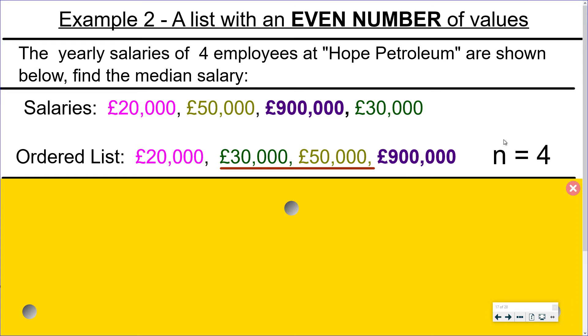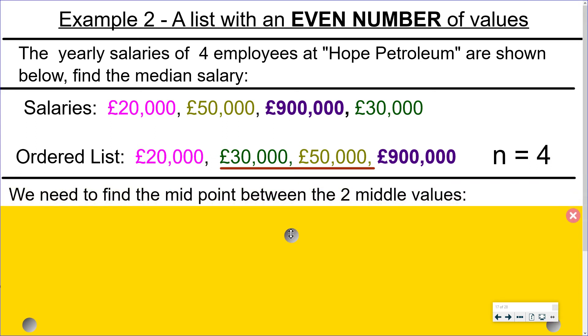Now because the list has an even number of values we can't actually pick up one number as being the middle number from the list. So in this case we have two middle numbers, £30,000 and £50,000. So when your list has an even number of values you have to try and work out the midpoint slightly differently. So we need to find the midpoint between these two middle values.